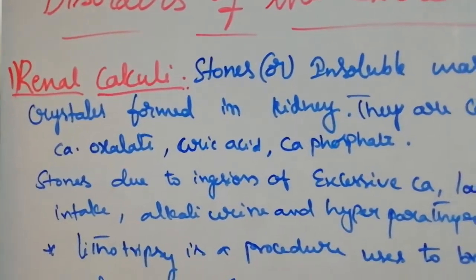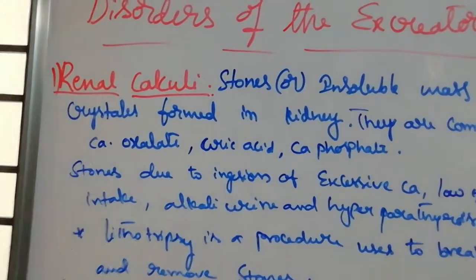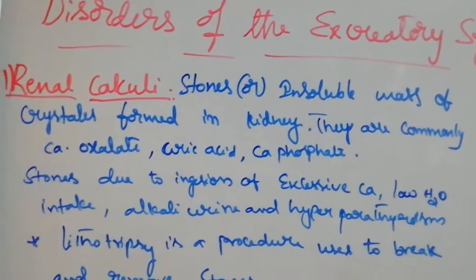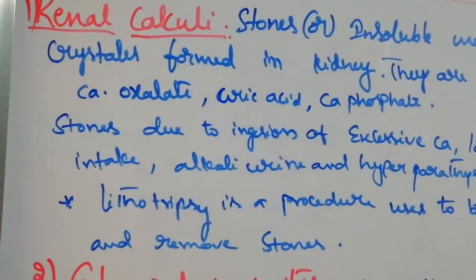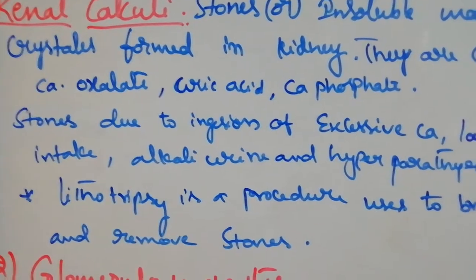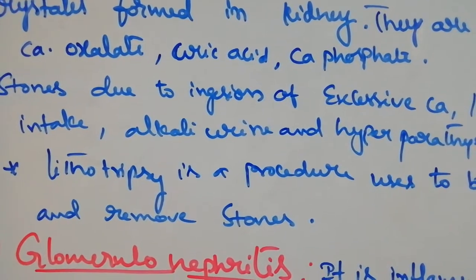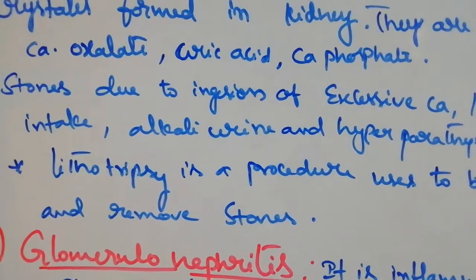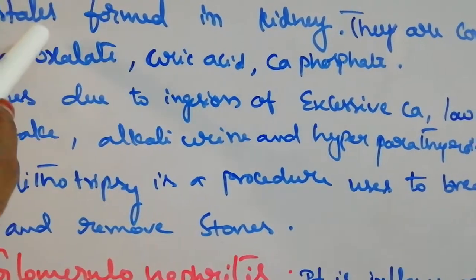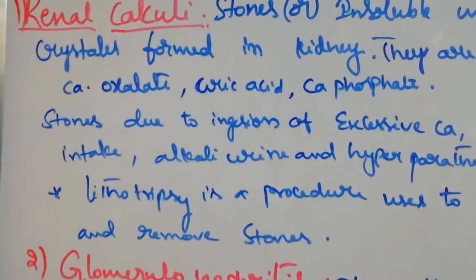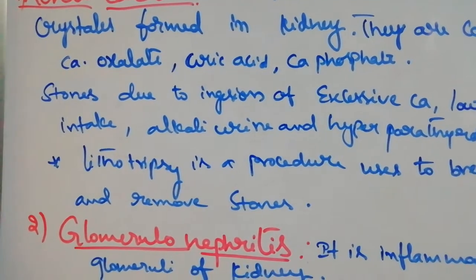The first disorder is renal calculi. Renal calculi means stones — insoluble crystals formed in the kidney. Those crystals are generally calcium oxalate, uric acid, or calcium sulfate. If these materials form crystals or stones, we call it renal calculi.